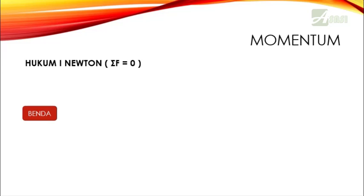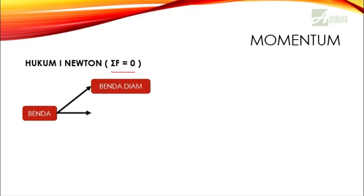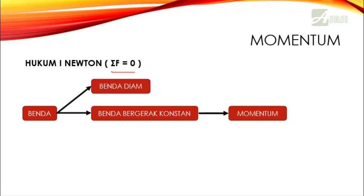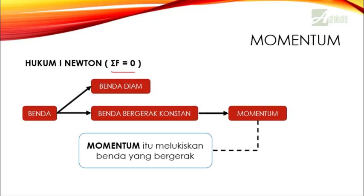Momentum — apa itu momentum? Saya akan menjelaskan momentum dari Hukum 1 Newton yang telah kalian pelajari di materi sebelumnya, atau gerak dasar benda. Jika benda tidak ada yang mengganggu — tidak ditarik atau didorong, atau menurut Newton sigma F sama dengan 0 — maka ada dua kemungkinan: benda tersebut diam, atau benda tersebut bergerak dengan kecepatan konstan. Nah, benda bergerak dengan kecepatan konstan itu bisa dikatakan momentum. Jadi momentum itu menggambarkan benda yang bergerak.